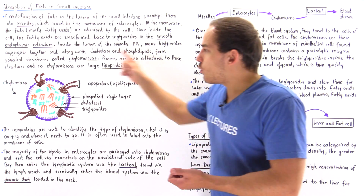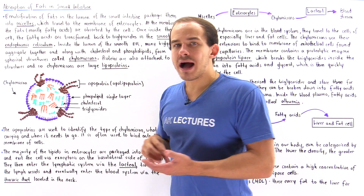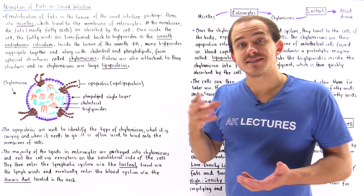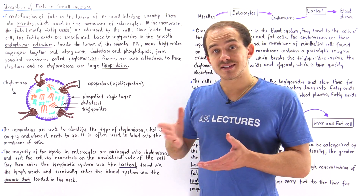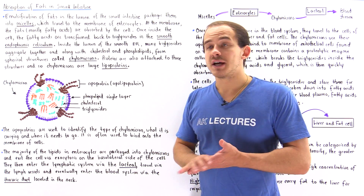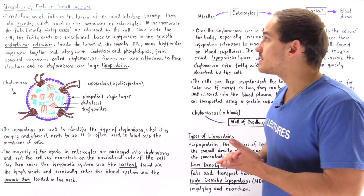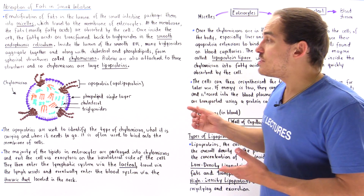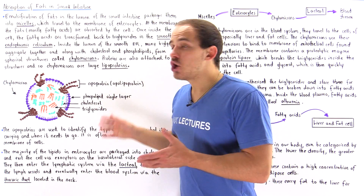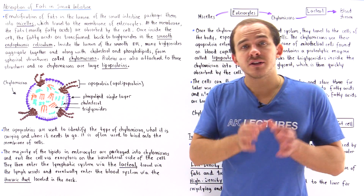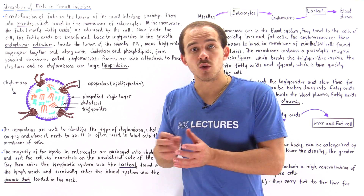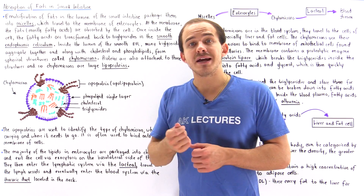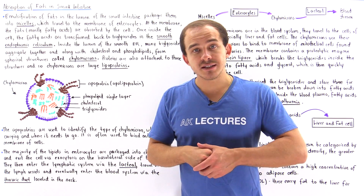Our chylomicrons exit the basolateral membrane side of the enterocyte and go directly into our lacteal, which ends up in our lymph system.